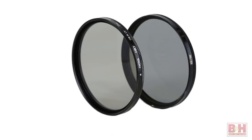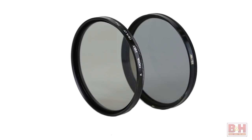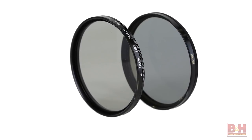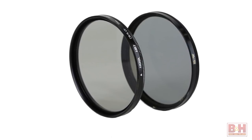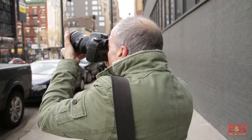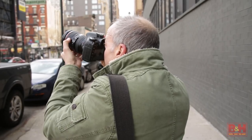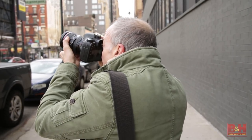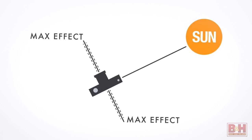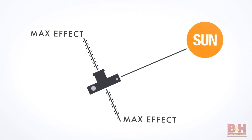Gray in appearance, polarizing filters are available in neutral as well as warm tones, and generally require about one and a half to three additional stops of exposure value. When using polarizers, the sun should not be directly in front of or behind your subject, but rather about 90 degrees off to your side.